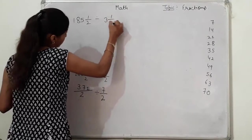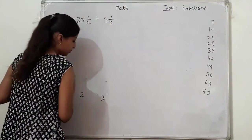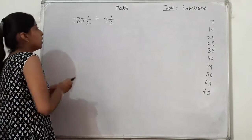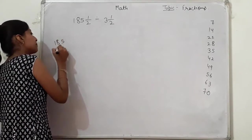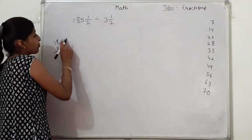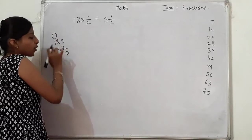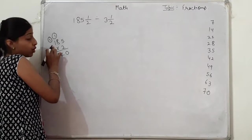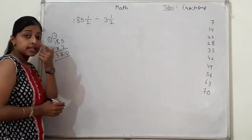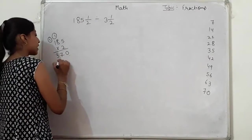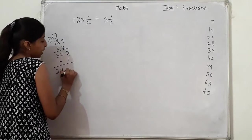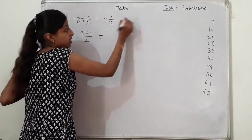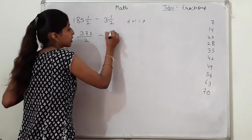देखो बच्चे — अब इसको solve करना है। 185 की 2 से multiply करेंगे: 2×5=10, 0 यहाँ, 1 carry। 2×8=16, 16 plus 1=17, 1 carry। 2×1=2, 2 plus 1=3। क्या है — 370, साथ में ऊपर 1 है, plus 1 = 371। तो यहाँ पर 371 by 2 आएगा। Divide में 3, 2's are 6, 6 plus 1 = 7 — तो 7 by 2।